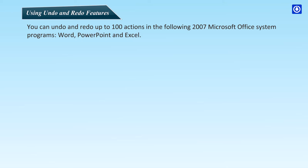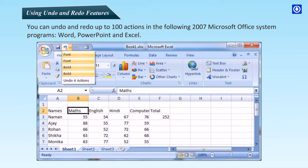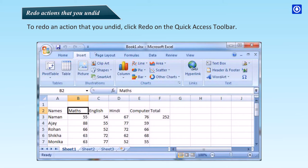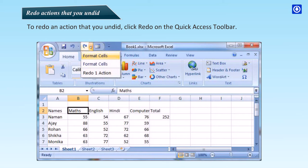Using undo and redo features: you can undo and redo up to 100 actions in Microsoft Office 2007 programs — Word, PowerPoint, and Excel. Click the Undo button on the Quick Access Toolbar. Or to undo several actions at the same time, click the arrow next to Undo, select the actions in the list, and click. All selected actions will be undone. To redo an action, click Redo on the Quick Access Toolbar.